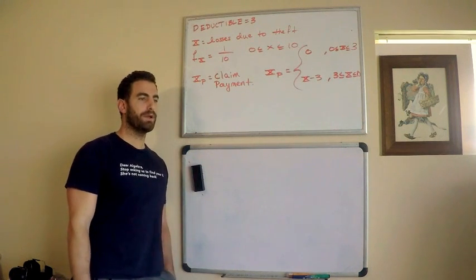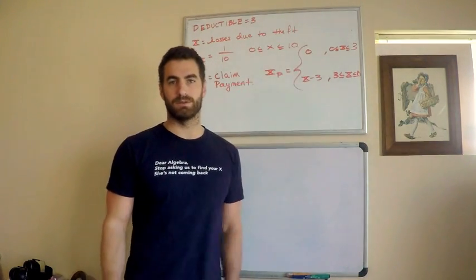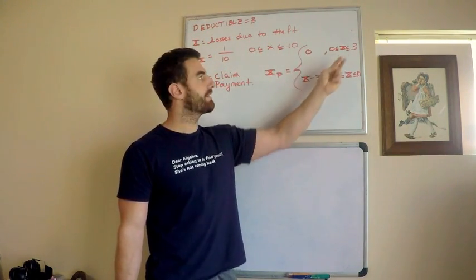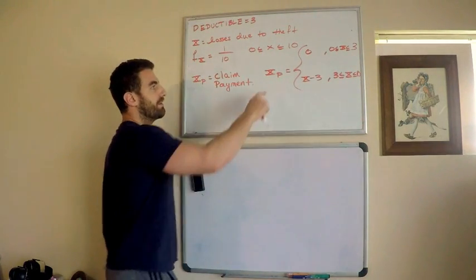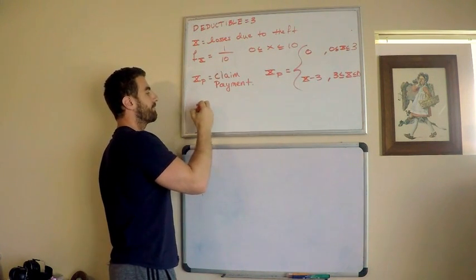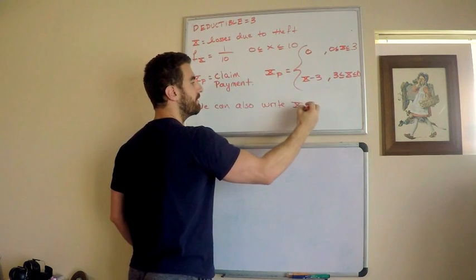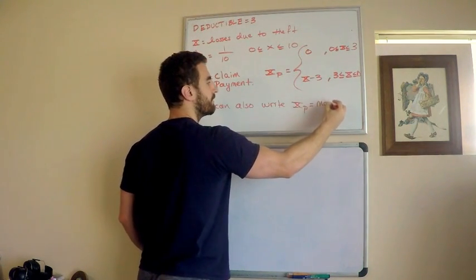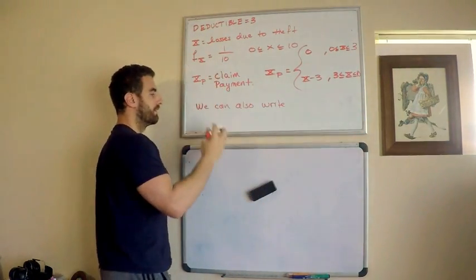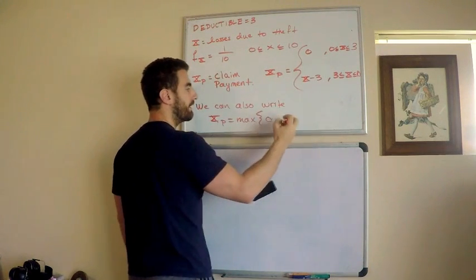Another way you can write this, actually, if you think about it for a second, the claim payment equals zero if the losses are less than deductible. You can also say the claim payment equals zero if x minus three is less than zero. That's exactly the equivalent to this, and you can also say the claim payment equals x minus three if x minus three is greater than zero. So what I'm getting at here is we can also write that xp, the claim payment is equal to the maximum of zero, x minus three.